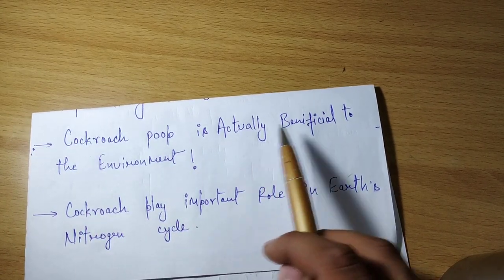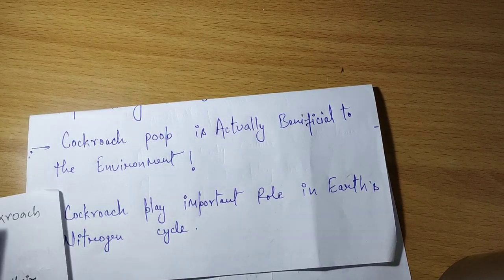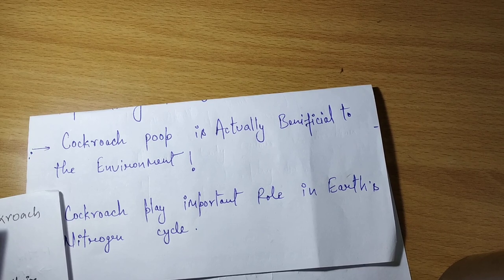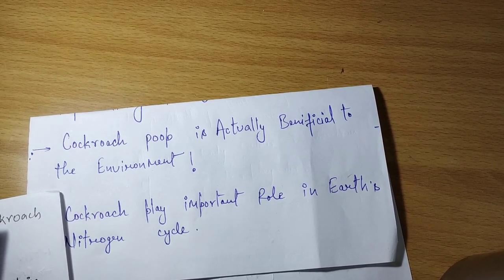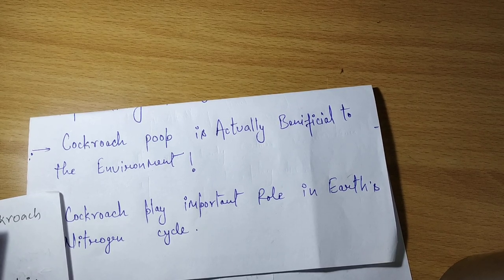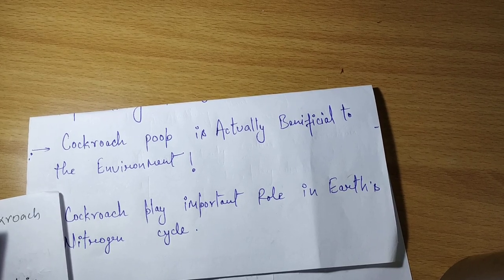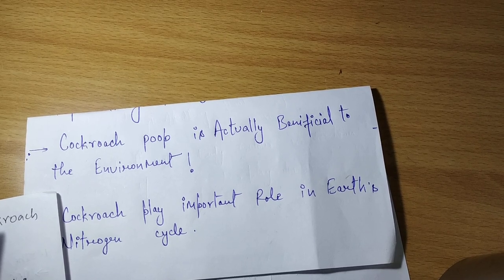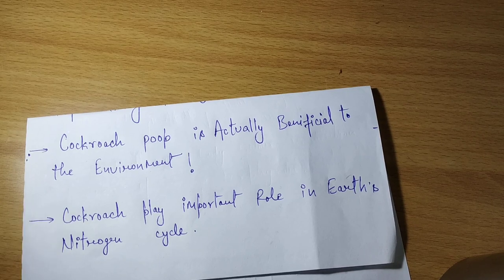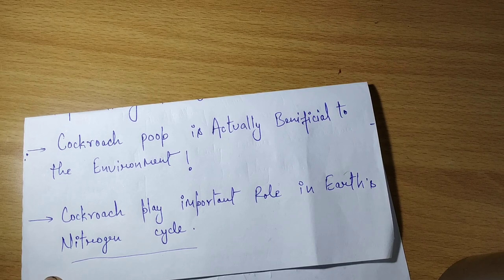Cockroach poop is beneficial for the environment because forest cockroaches consume decaying organic matter and release nitrogen back into the soil. जो forest के cockroach होते हैं, वो dead decaying matter पे feed करके nitrogen waste तुरंत soil को वापस कर देते हैं — इसीलिए यह nitrogen cycle में help करते हैं। This is all about cockroach.